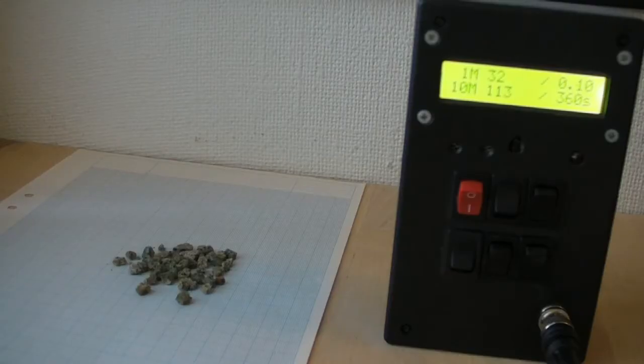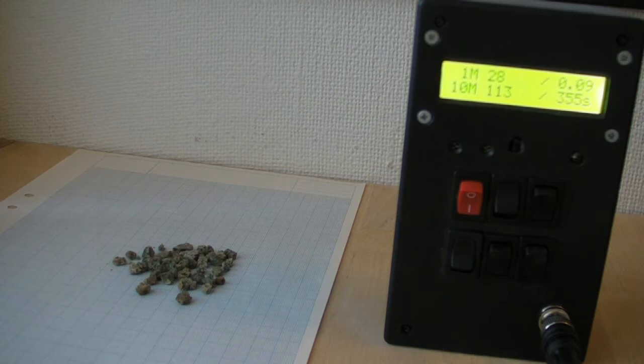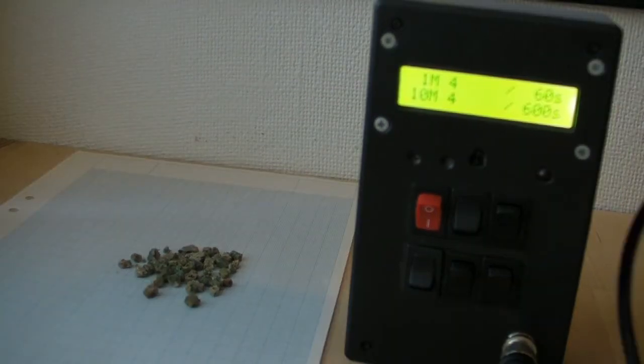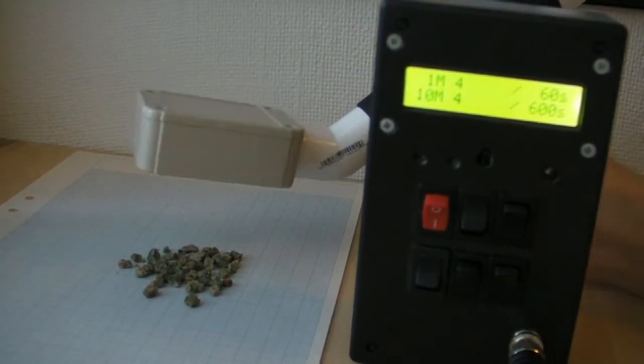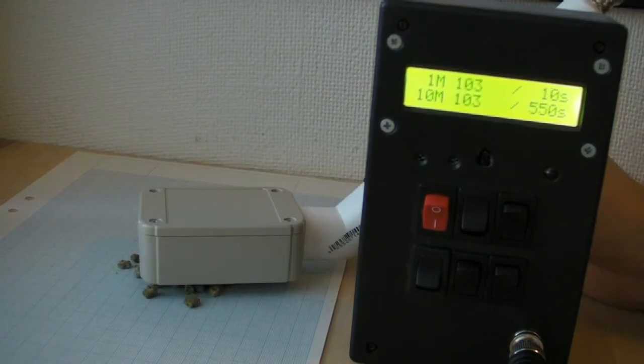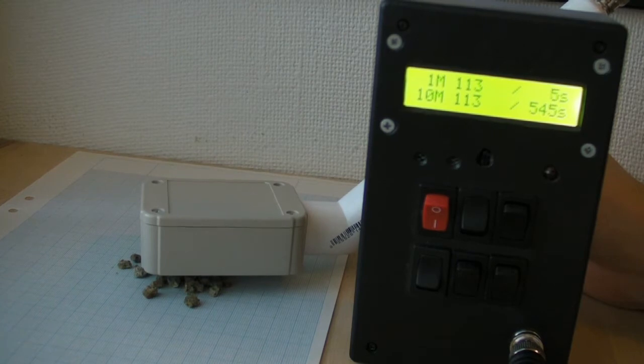A background radiation measurement reveals that my background radiation is at about 30 counts per minute. Now let us measure the trinitite. It stabilizes at a little more than 100 counts per minute, about 3 times background levels.